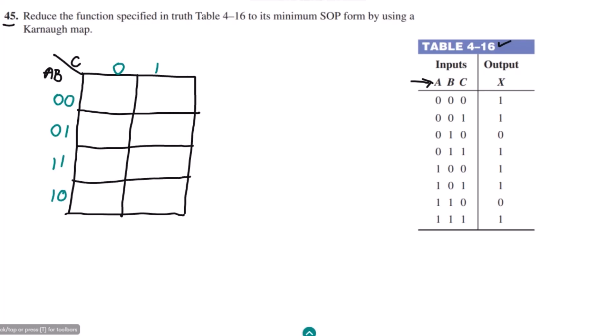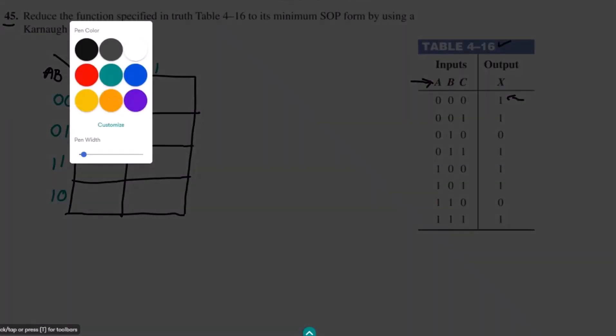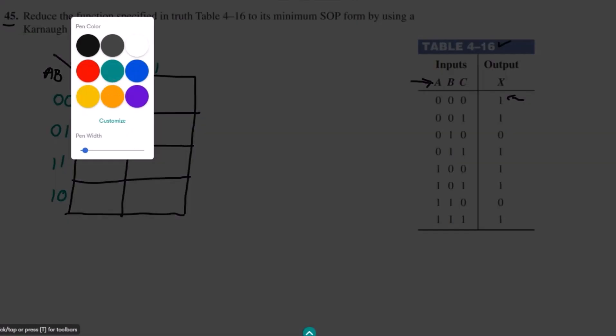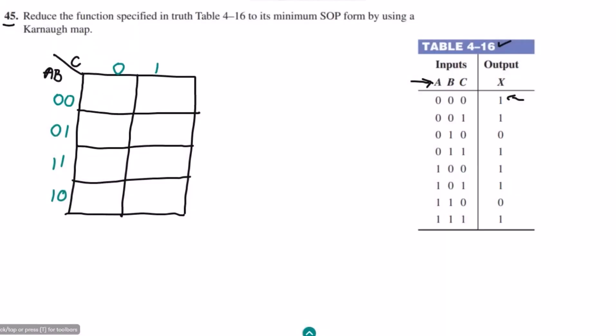These are the cells and here I have to write 1s for all the values where I have got this 1. I have this output equal to 1 for 000, so let me write here 1 for the 000 and for 001 as well, so this is also 1.